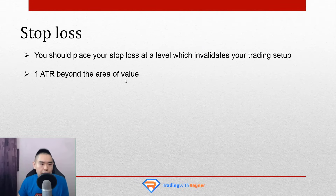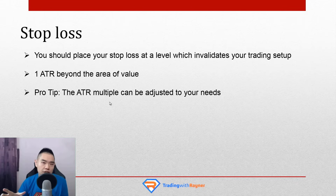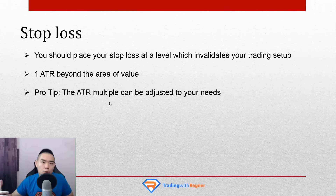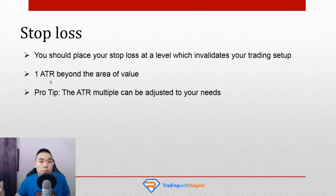One last pro tip: why 1 ATR and not 2 or 3? It's perfectly fine to adjust the ATR multiple to your needs. Keep in mind that the wider your stop loss, the smaller your position size will be to accommodate your risk management. The smaller the stop loss, the larger the position size you can use — but the downside is you might get stopped out prematurely. Personally, I simply go with 1 ATR beyond the area of value. That's it for stop loss — now let's move on and talk about exits when the market moves in your favor.